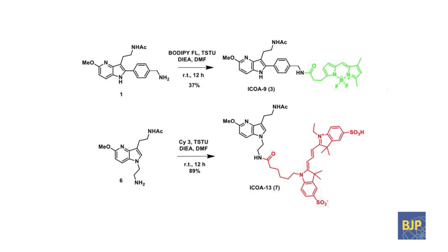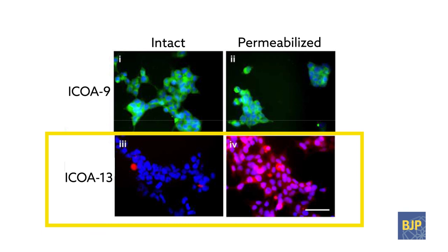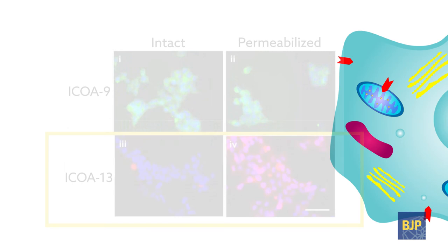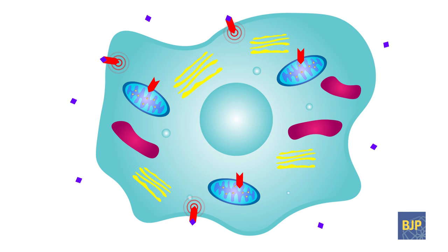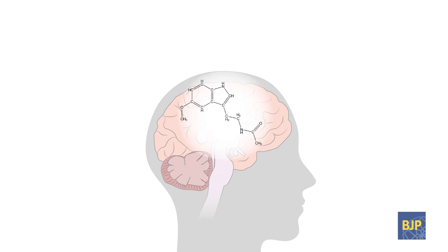These efforts paid off. One of the synthetic hormones, ICOA13, was unable to penetrate the cell membrane and was found to activate receptors exclusively outside the cell. This cell-impermeable compound allowed the researchers to differentiate, for the first time, the biochemical signals at the cell's surface from those on neuronal mitochondria.